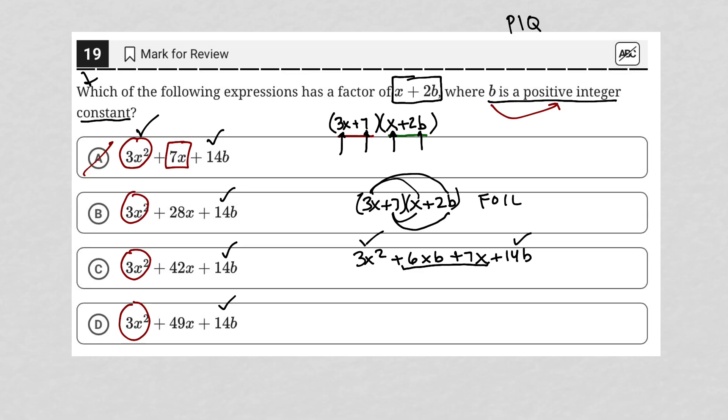Now I go to choice B. So if choice B is correct, that means 6xb plus 7x must equal 28x. Let's see, I can simplify this. Subtract 7x from both sides. I'd have 6xb equals 21x. I can then divide both sides by 6x in order to solve for B. And here, I'm not going to continue doing the math. I get into a B equals 21 over 6, but that also cannot be true because the question says B is a positive integer. And 21 divided by 6 is not an integer. So choice B is gone for that reason.